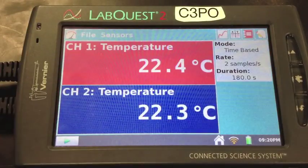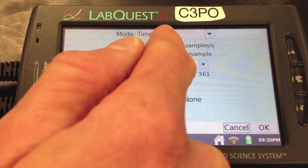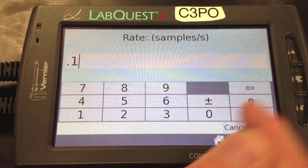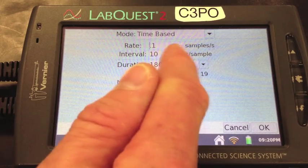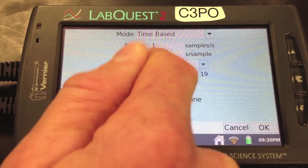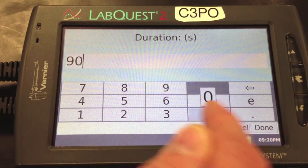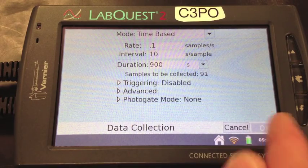Let's set up your LabQuest to collect data. Let's change the rate to 0.1 samples per second. Let's change the duration to 900 seconds. So that's going to be 15 minutes.